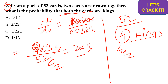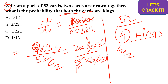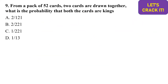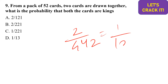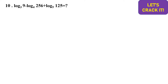Simplifying 6 divided by 52C2: 52C2 = (52 × 51)/2 = 1326. So probability = 6/1326 = 1/221. Option C is the correct answer.